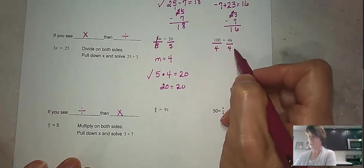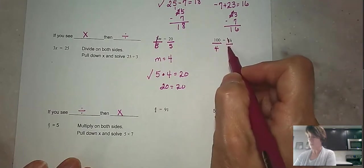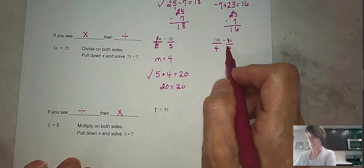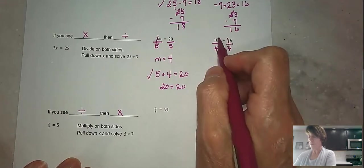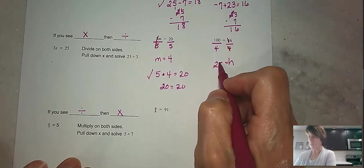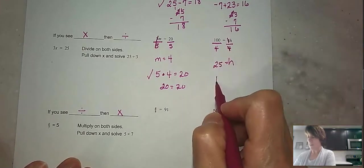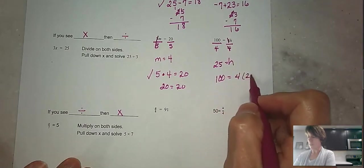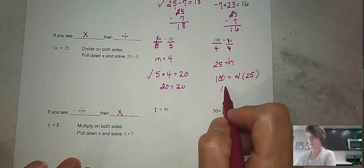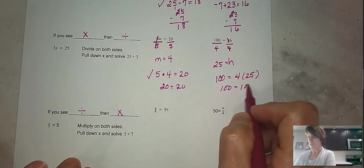And so we've got 4h divided by 4. 4 divides by 4 once, and 1 times h is h. So we pull down our h, and then 100 divided by 4 gives us 25. So now we'll check that. Is 100 equal to 4 times 25? And we know that that is true, that 4 times 25 is 100.